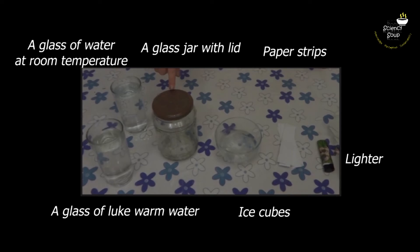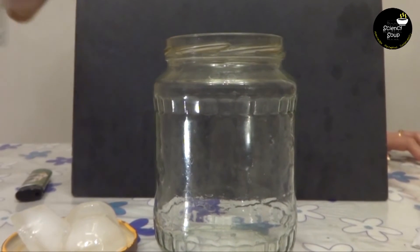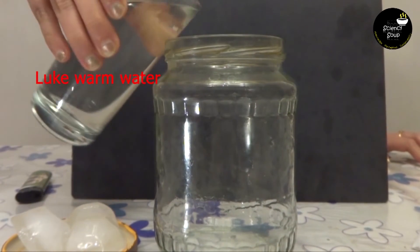To understand what polar vortex is, let's do a very simple experiment! For this experiment we need: a glass of water at room temperature, a glass of lukewarm water, an empty glass jar with a lid, some ice cubes, some paper strips, and a lighter. First of all, pour some lukewarm water into the glass jar.